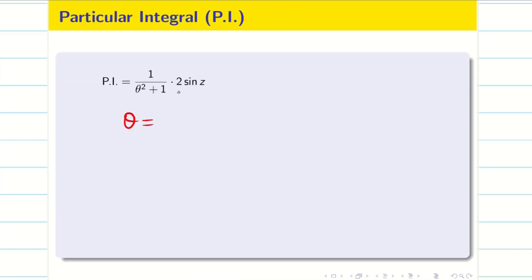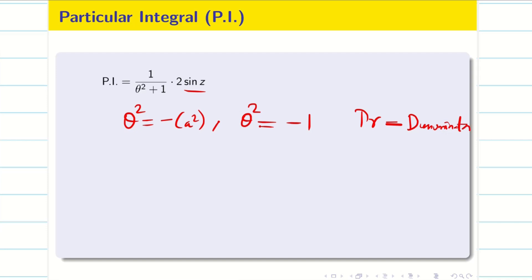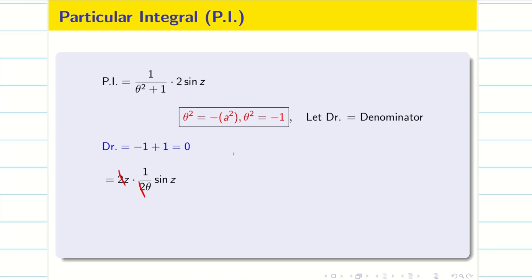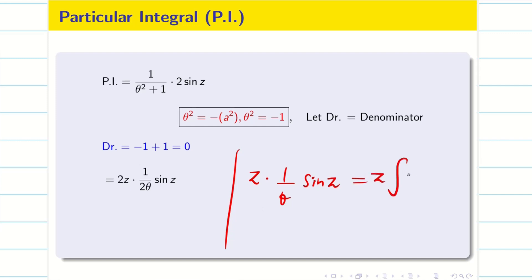Next, we go for the PI. If we have sin z, the rule is θ² = −a². Here θ² = −1, and the denominator (DR) = −1 + 1 = 0. So we multiply by z and differentiate the denominator with respect to θ, giving z · (1/2θ) · 2 sin z. The 2s cancel, leaving z · (1/θ) sin z. Since 1/θ means integration with respect to z, we get z · ∫sin z dz = z · (−cos z) = −z cos z.